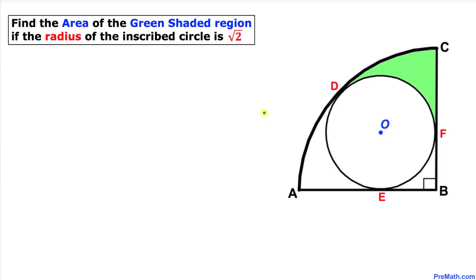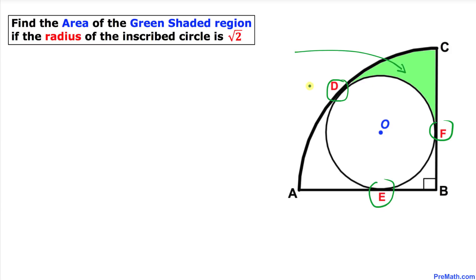Welcome to PreMath. In this video tutorial we have a smaller circle inscribed inside a quadrant circle, where the radius of the smaller circle is square root of 2, with points of tangency at D, E, and F. We are going to calculate the area of the green shaded region.